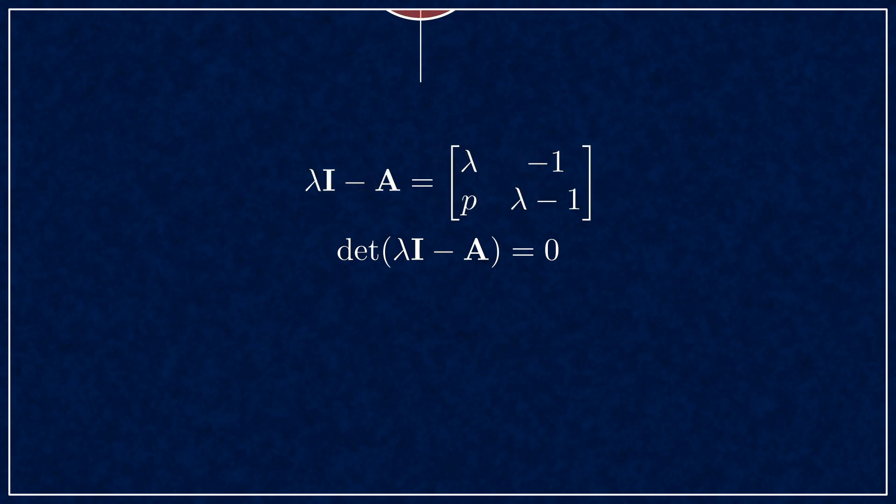Let's go ahead and calculate the eigenvalues for our system. The characteristic equation is lambda times lambda minus 1 minus p. This simplifies to lambda squared minus lambda plus p. We can use the quadratic formula to find the roots and look at the two cases for real and imaginary roots.